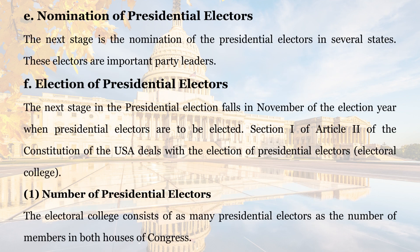E. Nomination of Presidential Electors. The next stage is the nomination of the presidential electors in several states. These electors are important party leaders. F. Election of Presidential Electors. The next stage in the presidential election falls in November of the election year when presidential electors are to be elected. Section I of Article II of the Constitution of the USA deals with the election of presidential electors — the Electoral College.